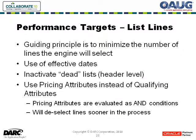So we've minimized the number of attributes and tuned how they get mapped. Now let's look at list lines. We want to minimize the number of lines the engine will possibly select when performing its actions. Make sure effective dates are in there, and if you have lists that are no longer used, make sure to inactivate those. Effective dates help, but as a backup, it never hurts to inactivate any dead lists that are out there.